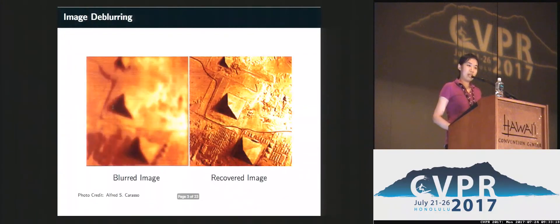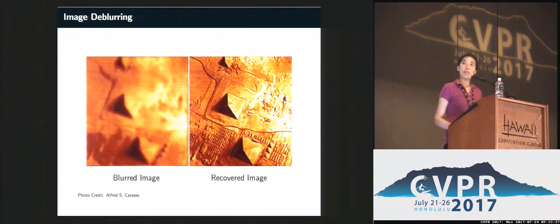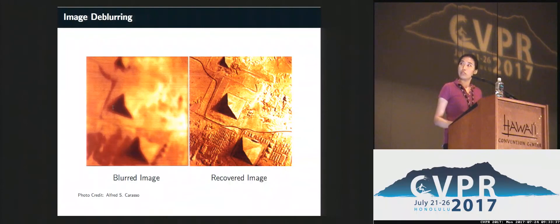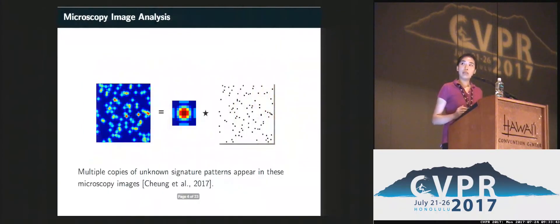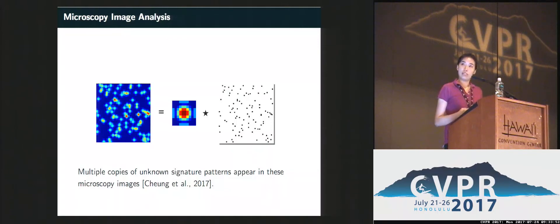Blind deconvolution is a fundamental and recurring problem across several fields. In computer vision, the most familiar example is image deblurring, where we model the blurred image due to camera shakes as a convolution of the underlying natural image and some blur kernel, and the inverse problem of finding the original image is a blind deconvolution problem. This is also important in scientific data analysis — for example, in microscopy imaging, where the observation is multiple copies of an unknown signature pattern and we want to recover the signature pattern as well as their locations.